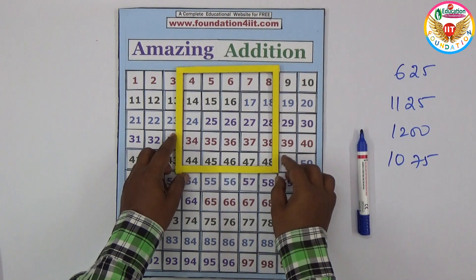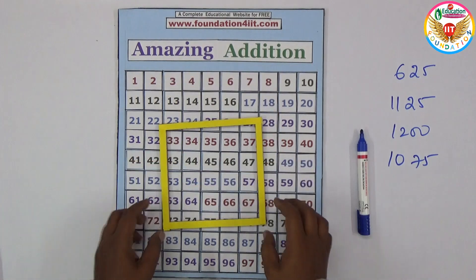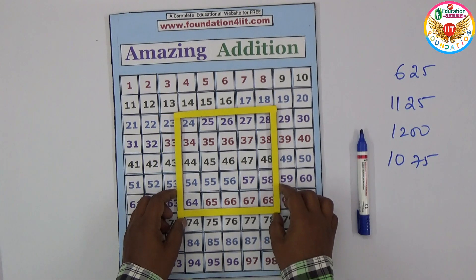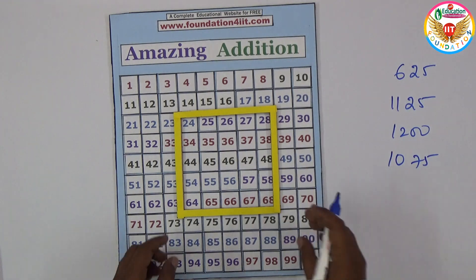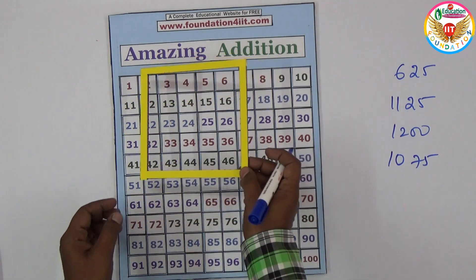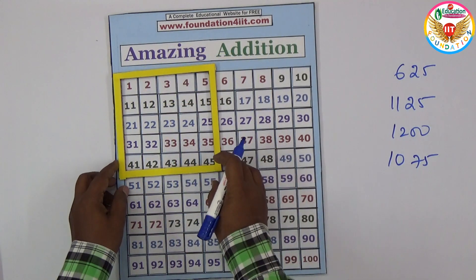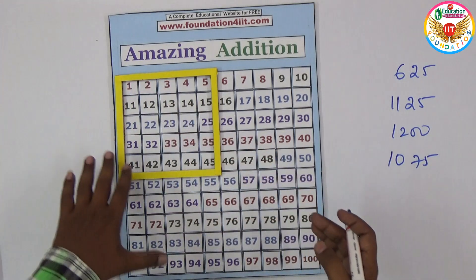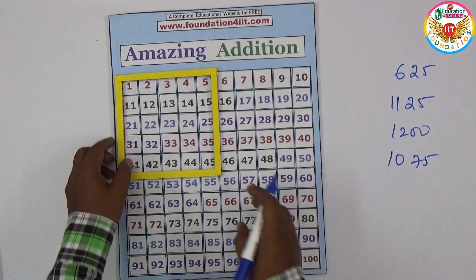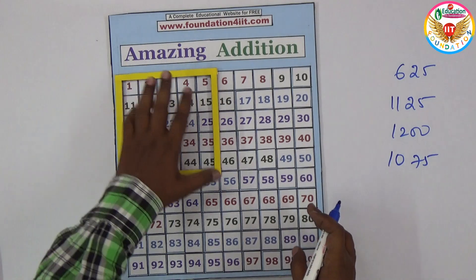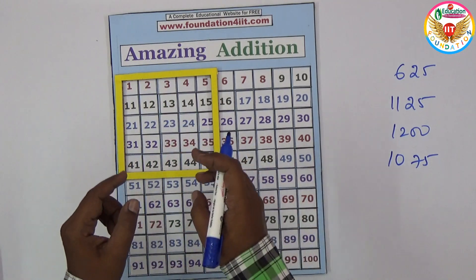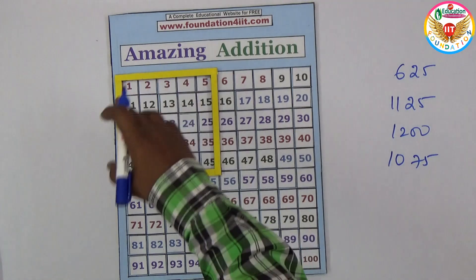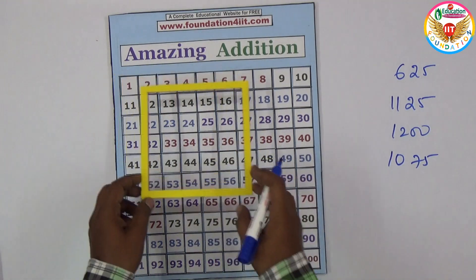By arranging the grid, it's a very interesting thing to show at any exhibition or to an audience. Just let them place the strip anywhere they like. Out of the 25 numbers in the box, just by seeing one number you can immediately say the total sum of all 25 numbers.